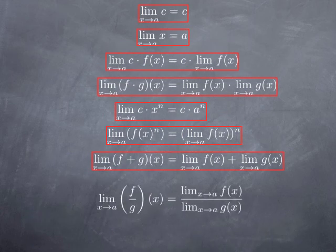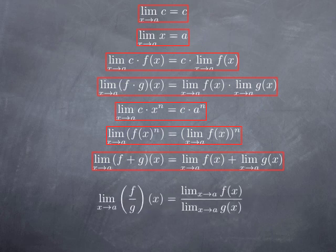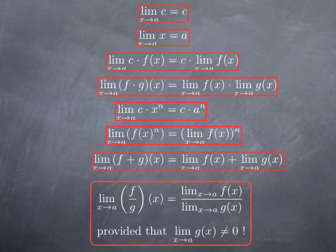So we've seen how to obtain the limit of a sum, of a product, of a power, and of a constant multiple. One thing that remains is what happens for the limit of a quotient — is it the quotient of the limits? Indeed it is, but provided the formula makes sense, i.e., we do not divide by zero. So this will not work as expected if the limit of g(x) at a is zero. But if that is not the case, then the limit of a quotient is the quotient of the limits.